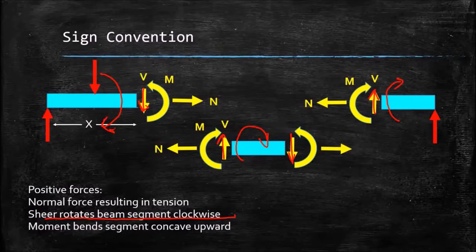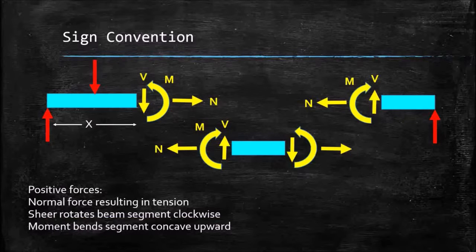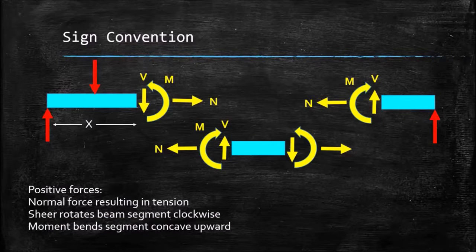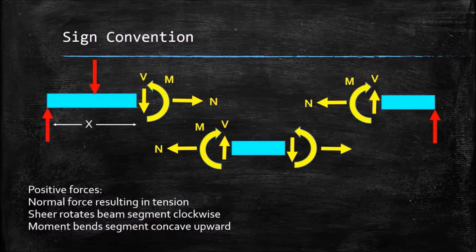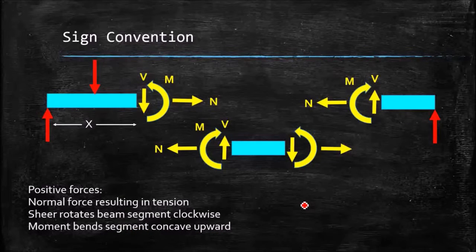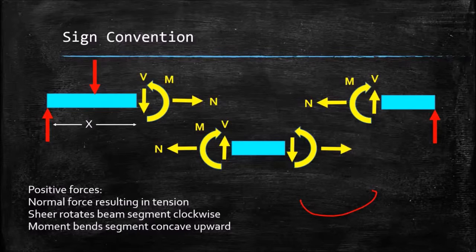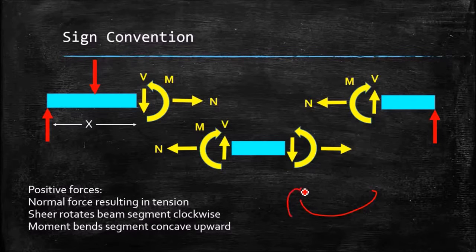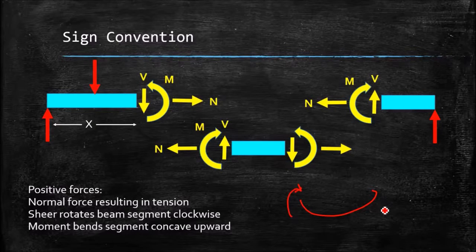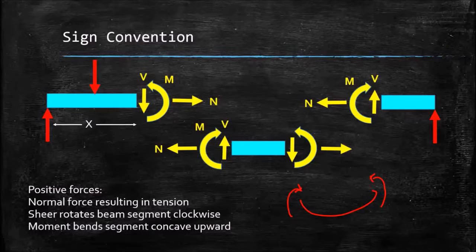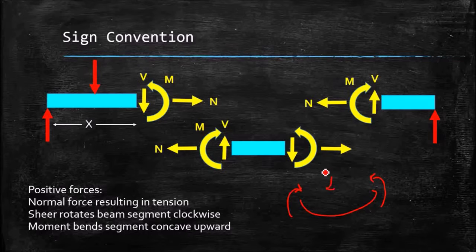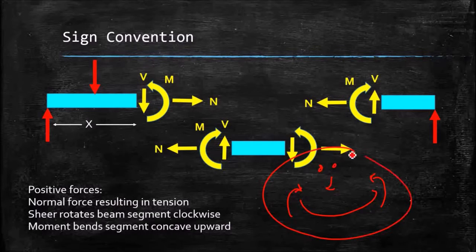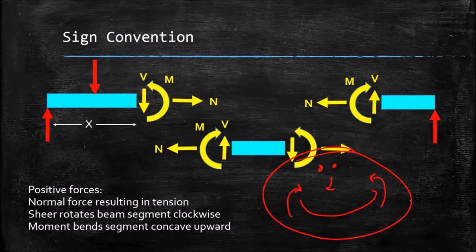And then for our moments, we say anything that bends a segment concave upward is positive, so if I'm bending a segment like this, we have moments applied that way, that gives us our concave upward direction, or if you prefer, a smiley face.